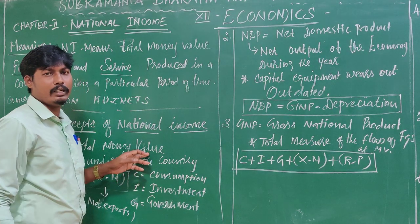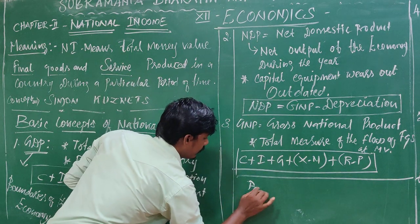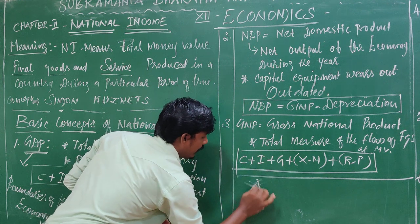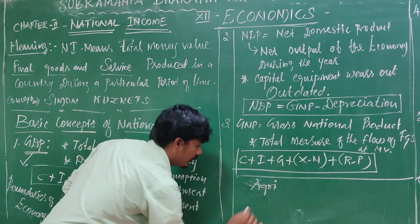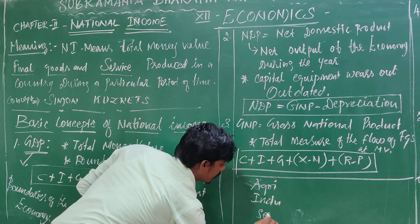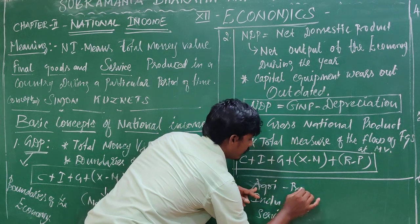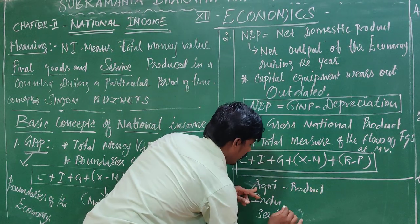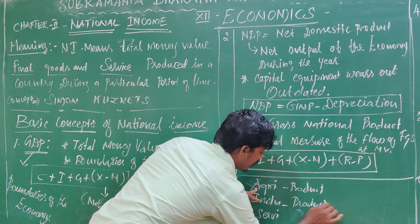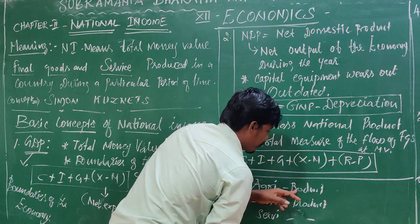The economy is divided into three sectors: the primary sector, also called the agricultural sector; the industrial sector; and the service sector. The agricultural sector produces goods. The industrial sector also produces goods. The service sector produces no physical product.